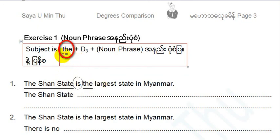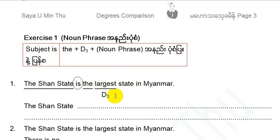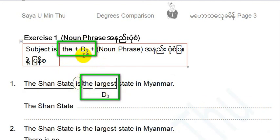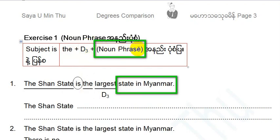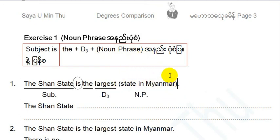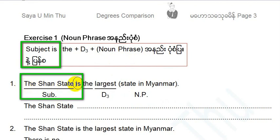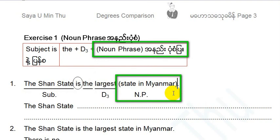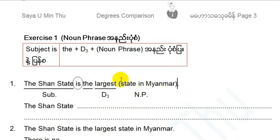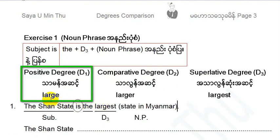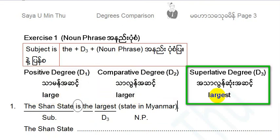The number D3 is the largest D3. The largest D3 is D3. The plus D3 plus noun freeze. Subject D3 is the name of noun freeze. The state D3 means the largest D3 is the name of noun freeze.